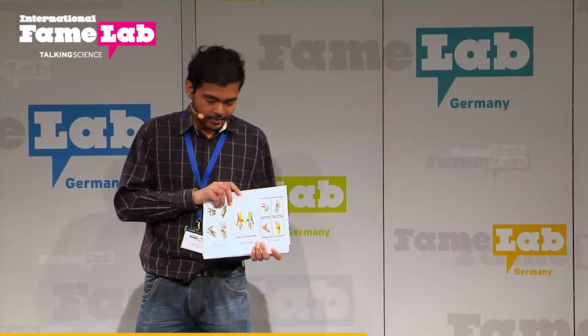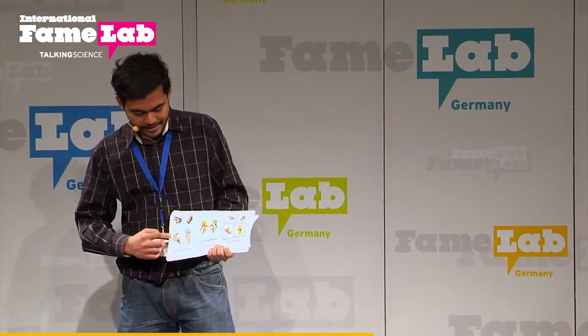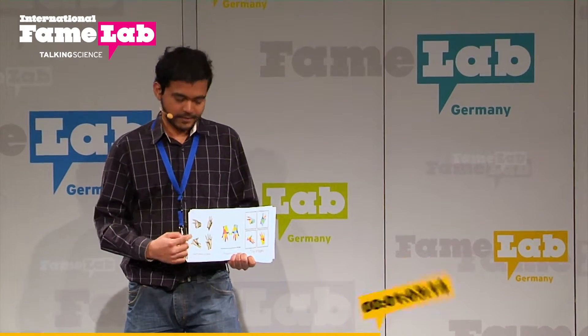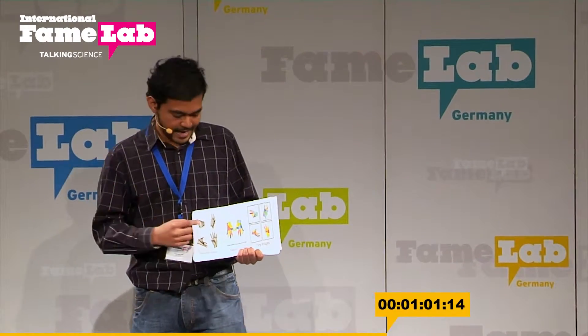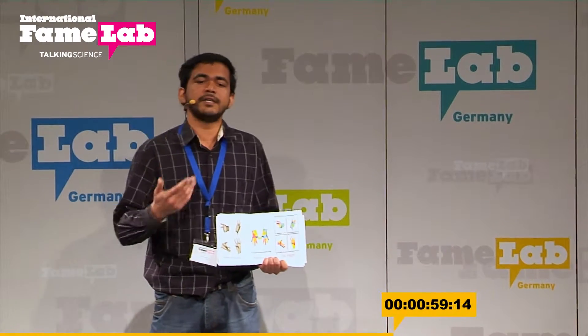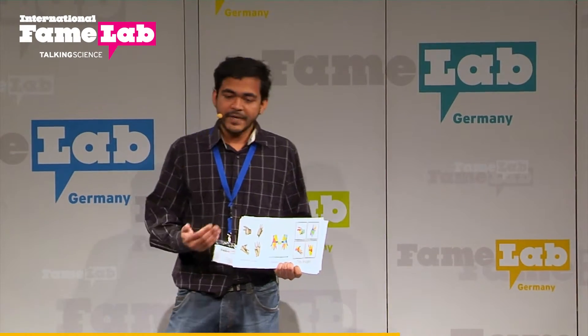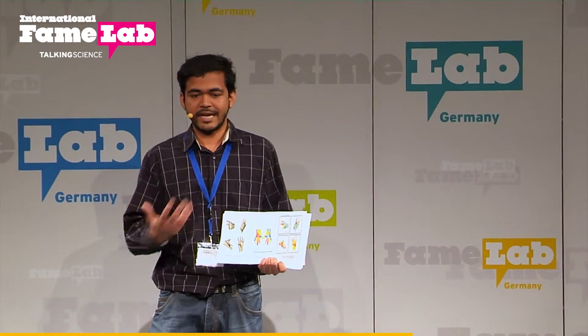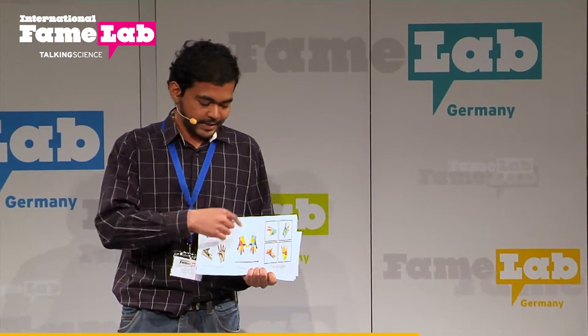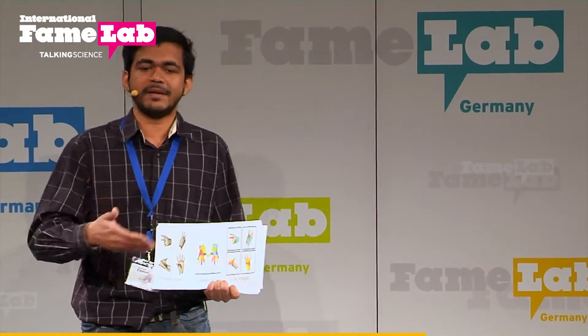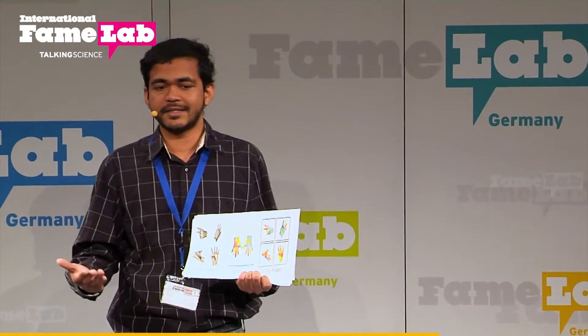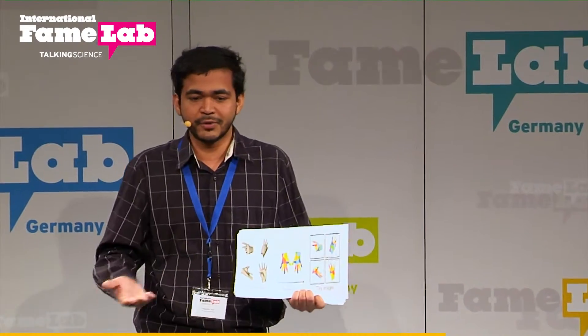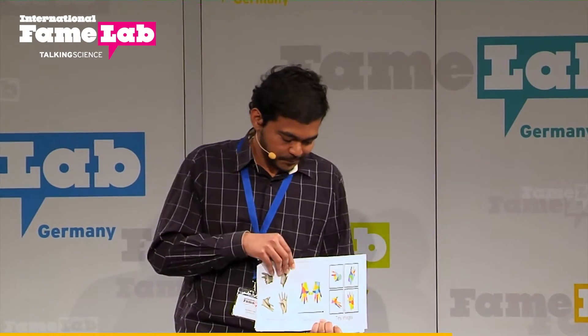Recognition is done by a database. We have to create a database first where every hand model has a particular meaning. Every meaning is mapped to what we do — the input, the recognition — and that helps in doing something on the screen, or in human-computer interaction, such as what a robot will do when I make a particular gesture.